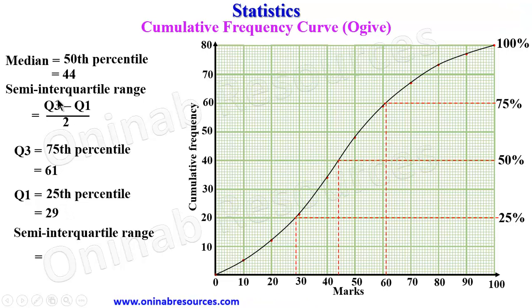That's going to give us Q3, 61, minus Q1, which is 29 divided by 2. And then this will give us 16. 16 is the semi-interquartile range of this distribution.